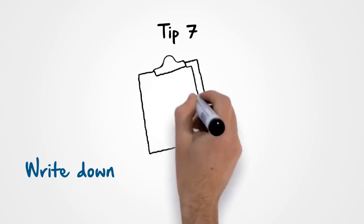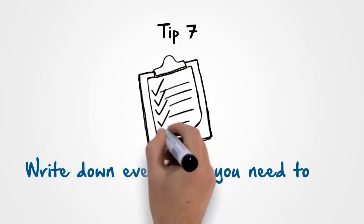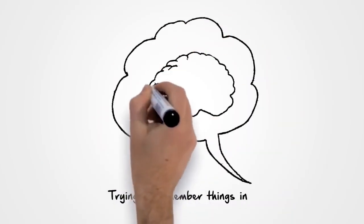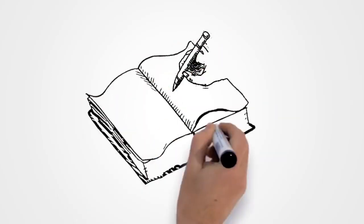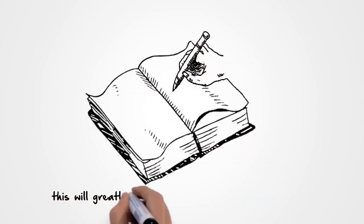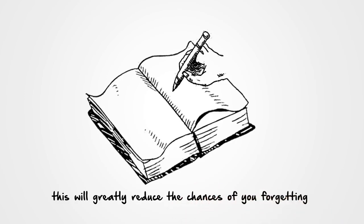Tip 7. Write down everything you need to do. Trying to remember things in your head is a recipe for disaster. Keep a notebook for writing things down, as this will greatly reduce the chances of you forgetting anything.